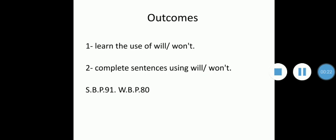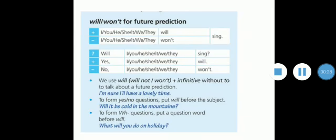You need to open your student book page 91 and your workbook page 80. We use will or won't, which is will plus not, plus the infinitive without to, to talk about future predictions. Will and won't are followed with a verb that is infinitive.